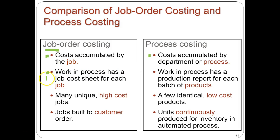In a job order cost system, work in process has a job cost sheet for each job — similar to how accounts receivable is backed by a subsidiary ledger per client. In a process cost system, work in process is backed up by a production report for each batch. Either way, anything in work in process should be backed up — by job cost sheets or production reports.